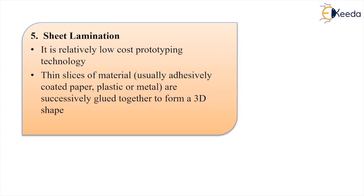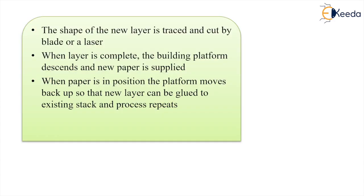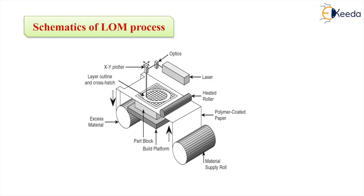If you look at the process, here there are two rollers to control the supply of paper with heat activated glue to the building platform. When new paper is in position, it is flattened and added to the previously created layer using this heated roller.